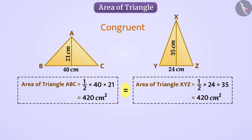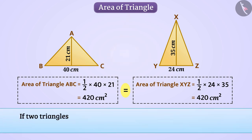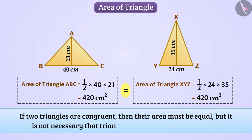Absolutely right. They are not congruent because their measurements are different and they do not cover each other completely. In short, if two triangles are congruent, then their area must be equal. But it is not necessary that triangles equal in area are congruent.